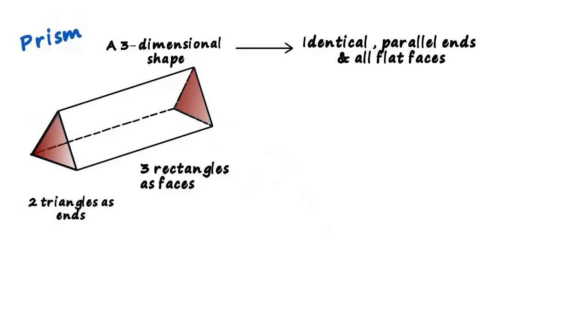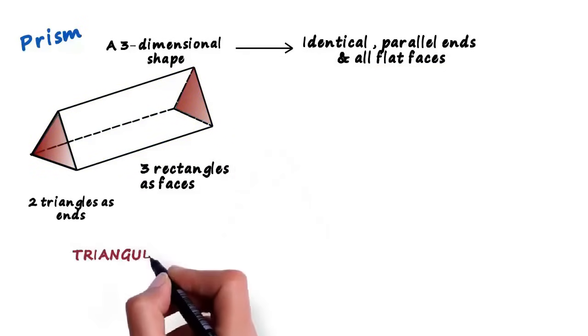The definition also says that all its faces should be flat. And in this figure, all faces are flat. They are rectangles. This, by the way, is called a triangular prism.